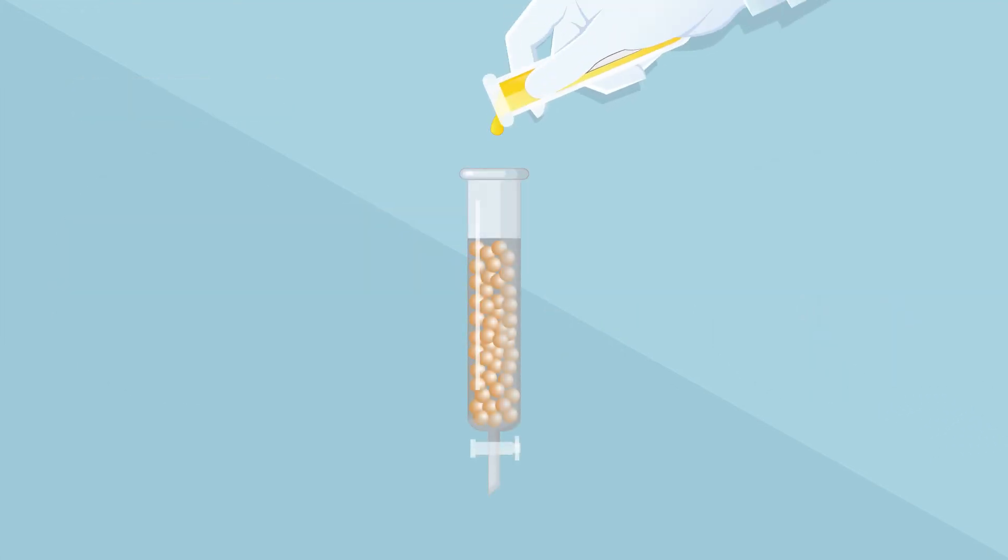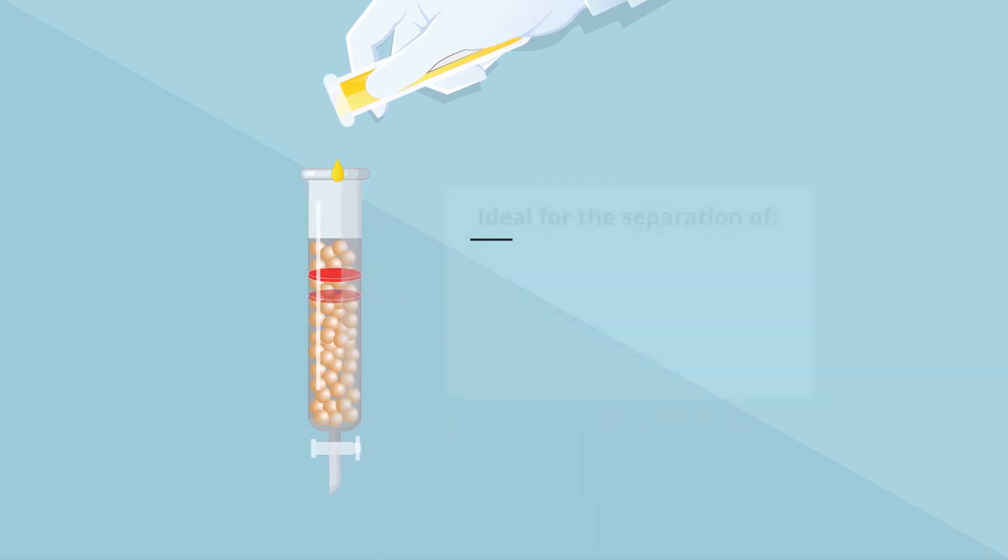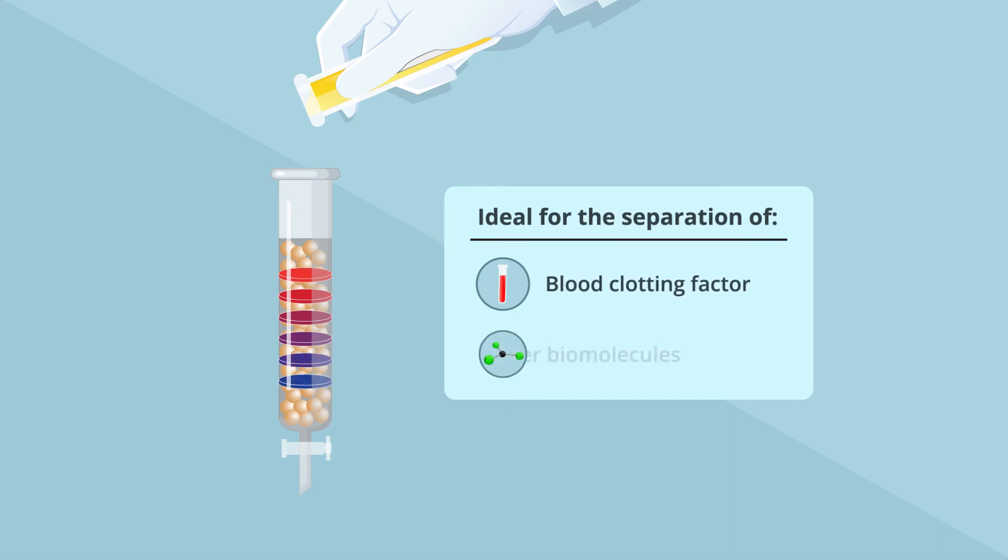This suggests that ion exchange chromatography resins with sulfate groups could be ideal for the separation of different components of human plasma-derived blood clotting factors.